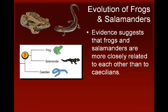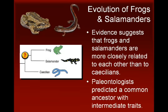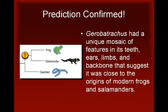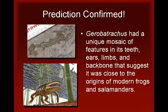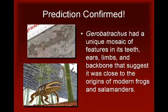Based on this evidence, paleontologists used evolutionary theory to predict the existence of a creature with a combination of frog-like and salamander-like features that should have existed prior to the earliest known frogs and salamanders in the fossil record. This prediction was confirmed by the discovery in Texas of the fossil remains of Gerobatrachus, a primitive amphibian that existed approximately 290 million years ago, well before the earliest fossil evidence of recognizable frogs and salamanders.